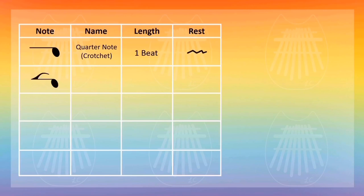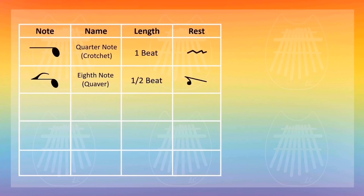This one looks similar to a quarter note, except it has a tail at the end. This is an eighth note. It's half of the length of a quarter note, which means it's half a beat. For an eighth note rest, it looks like this.